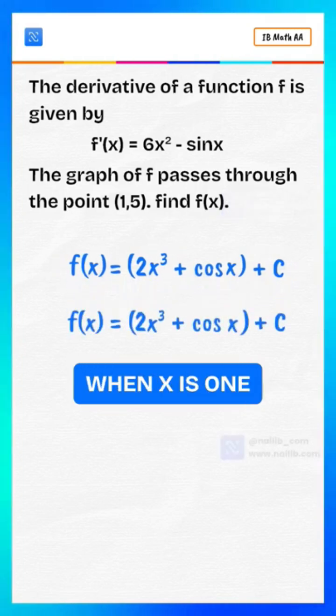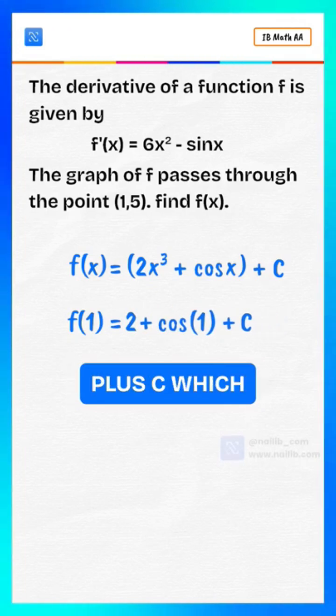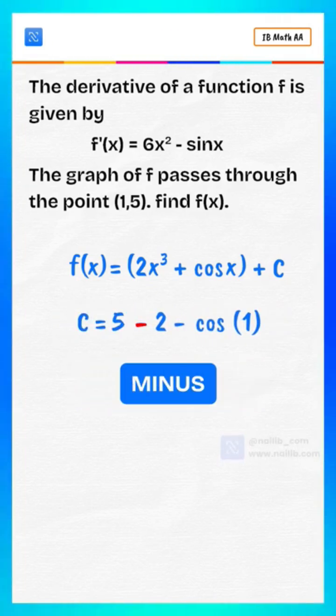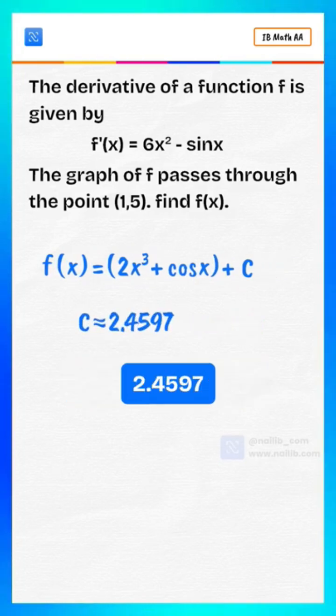Use the given point. When x is 1, f of 1 is 2 plus cosine of 1 plus C, which equals 5. That means C is 5 minus 2 minus cosine of 1, approximately 2.4597.